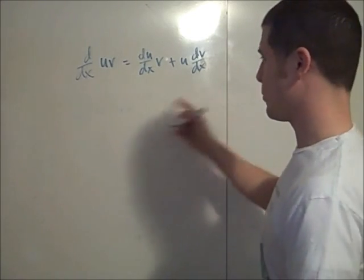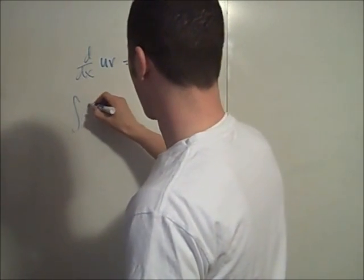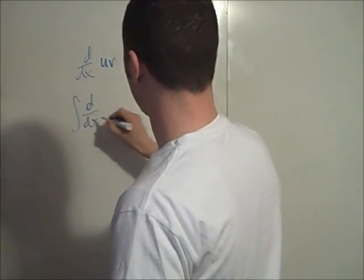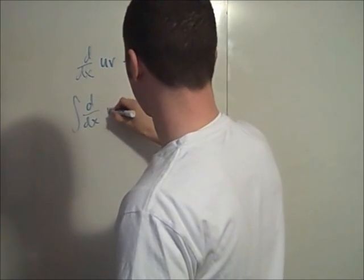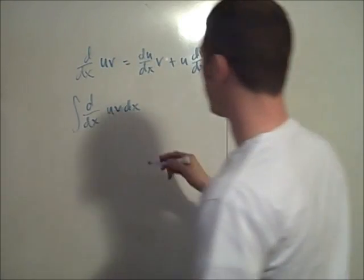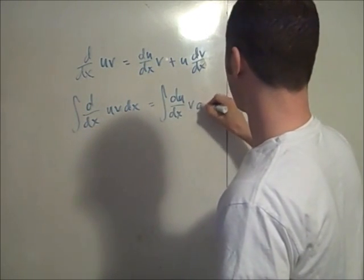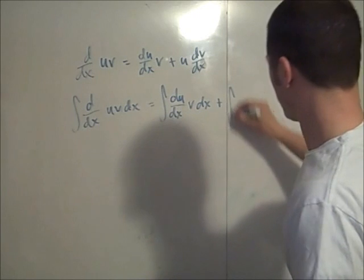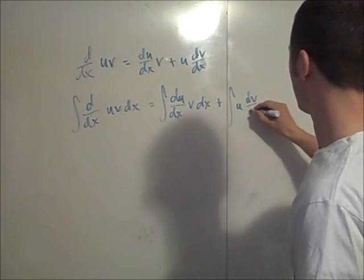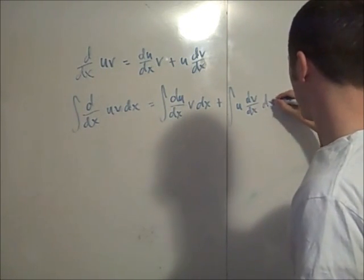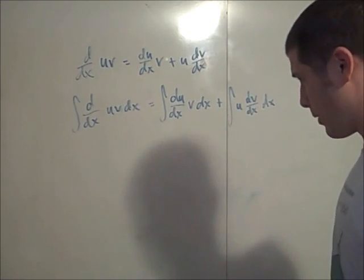Now, if we integrate both sides with respect to x, we have the integral of the derivative of uv dx, this is the integral of du/dx v dx plus the integral of u dv/dx times dx.